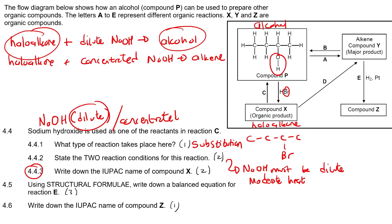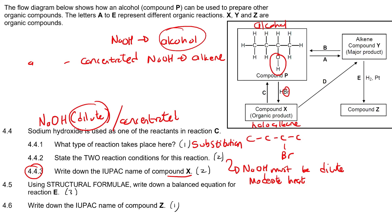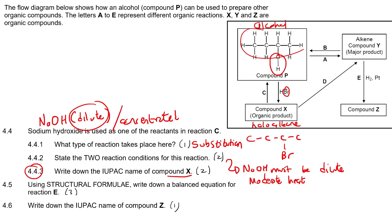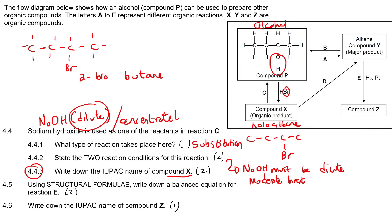Write down the IUPAC name of compound X. We showed you what compound X looks like — it's exactly the same molecule but just with the Br instead of OH. All of these other things are hydrogens. The name is very easy: it's a 4-carbon chain, so that's BUT-, it's just a haloalkane so we end with -ane, and on carbon number two we have a bromo branch. So that is 2-bromobutane.